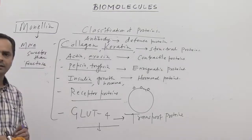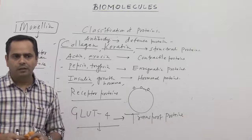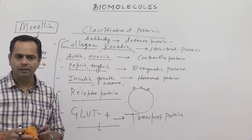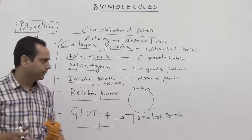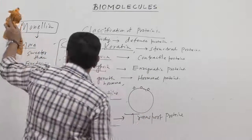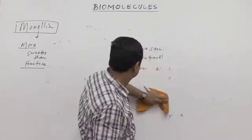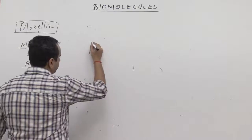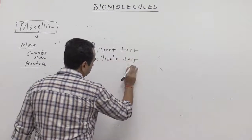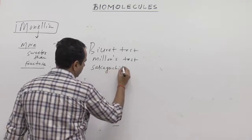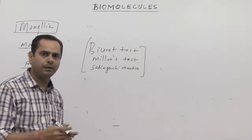In the last part of proteins, we cover the reagents used for chemical analysis of proteins. These include the Biuret test, Millon's test, and the Sakaguchi reaction. These are the tests used to distinguish proteins from other biomolecules.